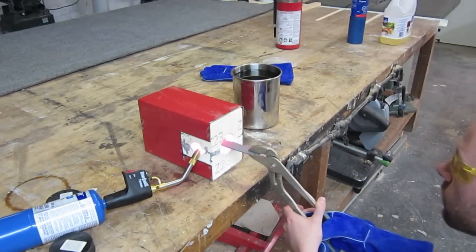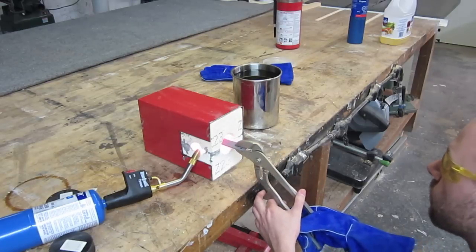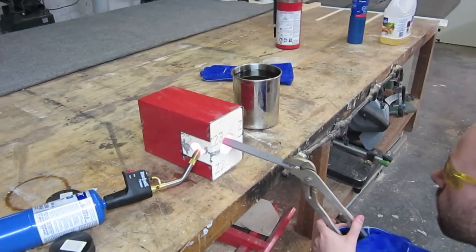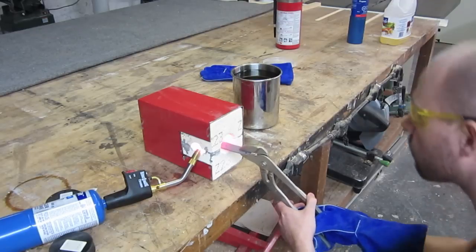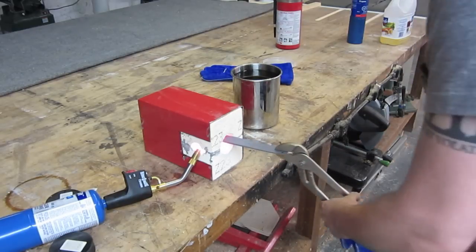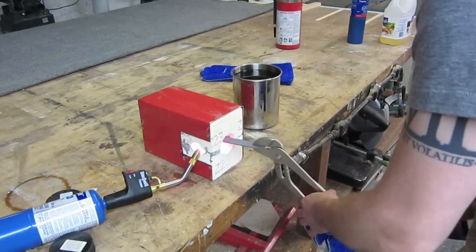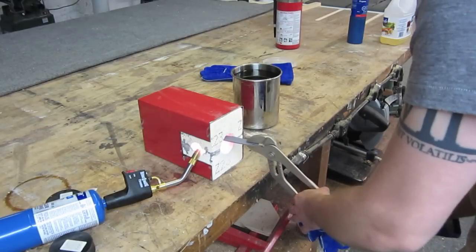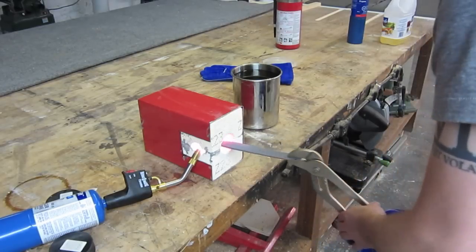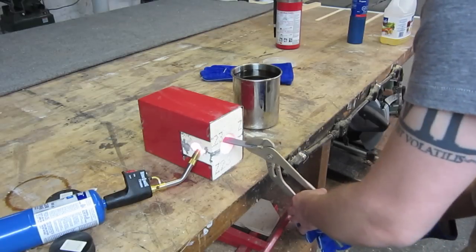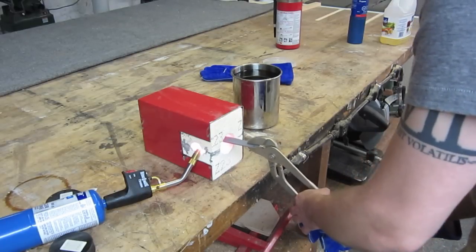Now it's time to start heating our knife. Notice that I'm constantly moving the blade around in the forge. This helps ensure that I don't overheat any particular part of the blade. What we're looking for is an even, dull cherry red color. If parts of the blade get hotter than dull cherry red, then they may end up being brittle.